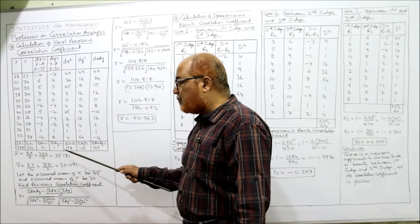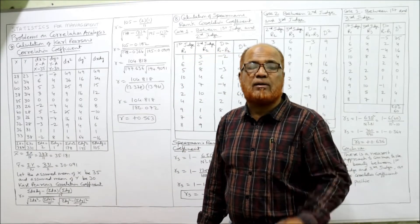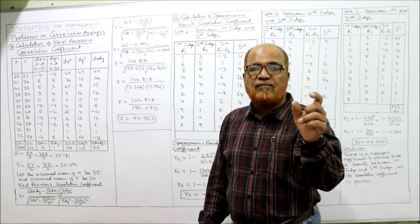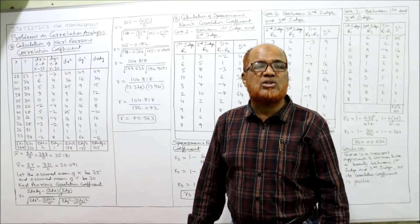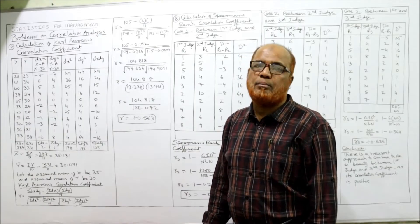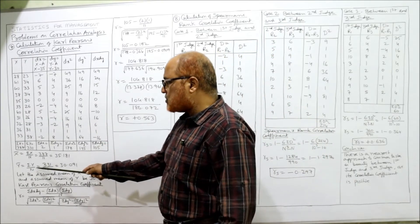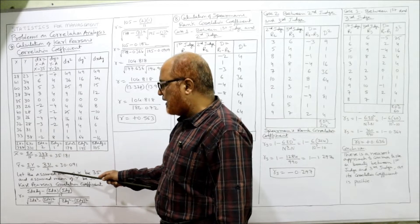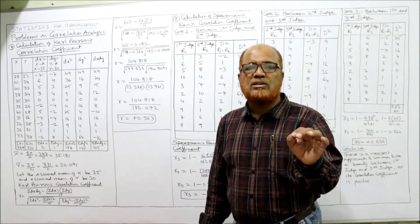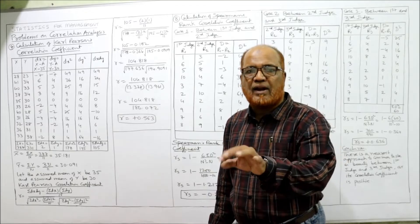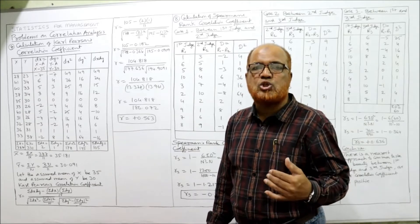So x-bar = summation x / n = 387 / 11 = 35.181 — it is in fraction. When the mean is in fraction, it is better to take the deviations from the assumed mean. Similarly, y-bar = 331 / 11 = 30.091. Both means are in fraction, so we will take the deviations from the assumed mean.